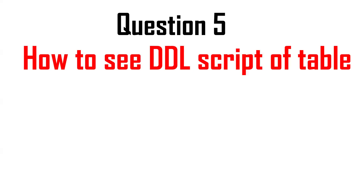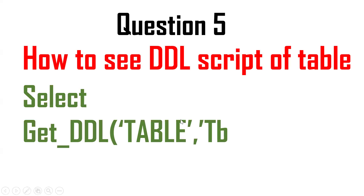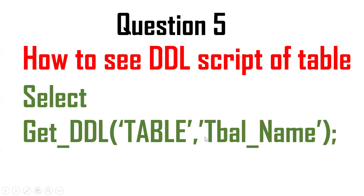Next question: how to see the DDL script of a table? If you want to see the definition or the CREATE statement of a table, go for SELECT GET_DDL('table', table_name). One more time — if you want to see the DDL, that is the CREATE statement syntax, use GET_DDL with the object type 'table' and the table name.